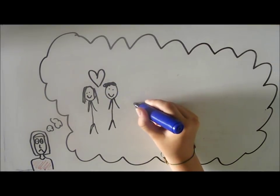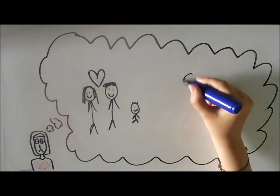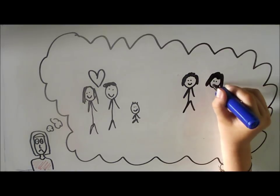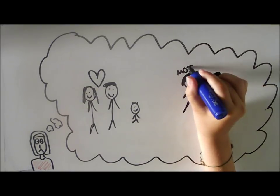We also find out that Offred was raised by her mother, who had been a feminist activist, and she had a best friend called Moira, who was a tenacious, rebellious lesbian who refuses to stand down against Gilead.